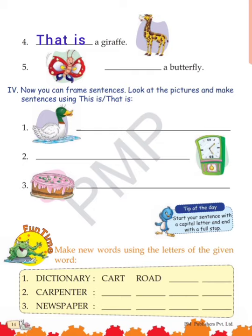The fifth one you will be doing on your own. Now moving on to exercise four: look at the pictures and make sentences using 'this is' or 'that is'. Children, you have to write the whole sentence on your own — aapko poora sentence aapne aap bana ke likhna hai.